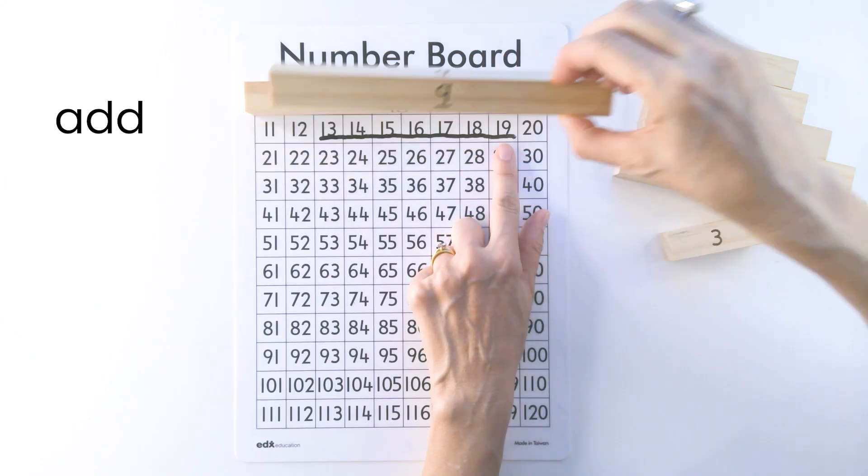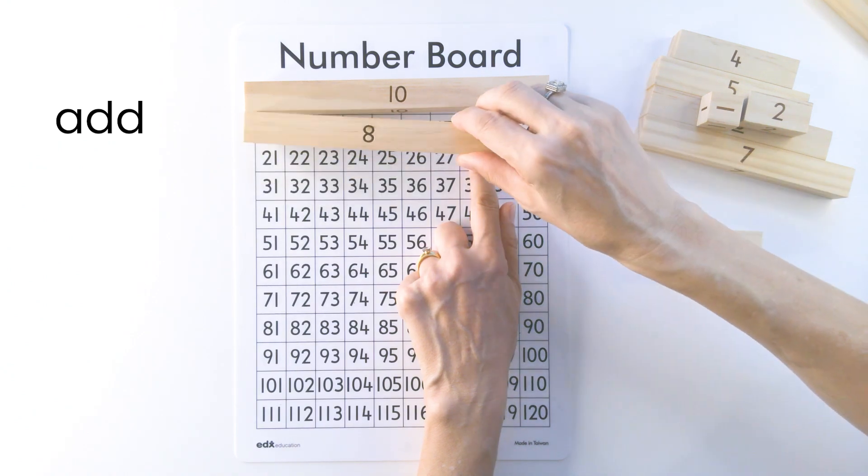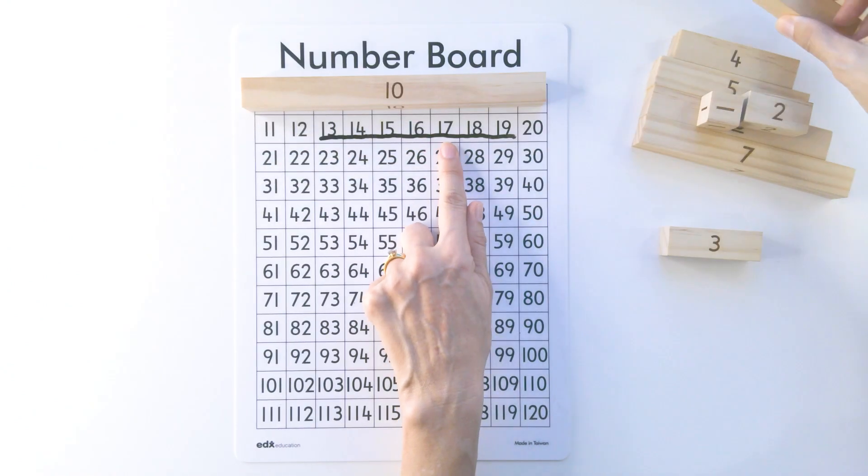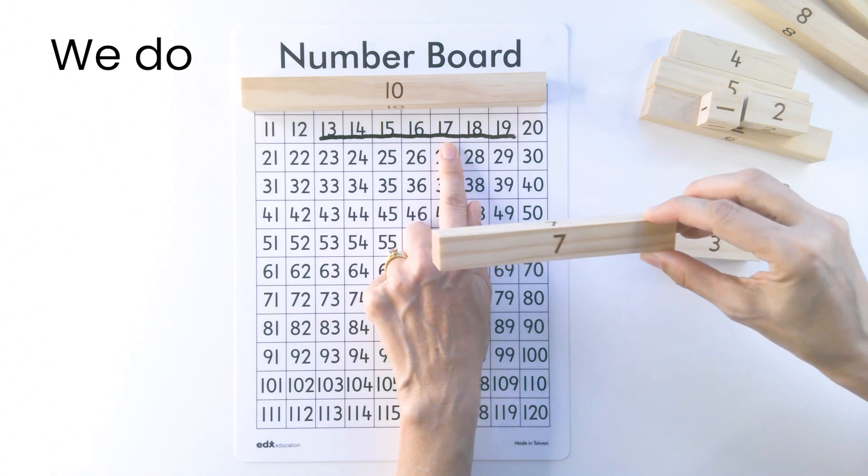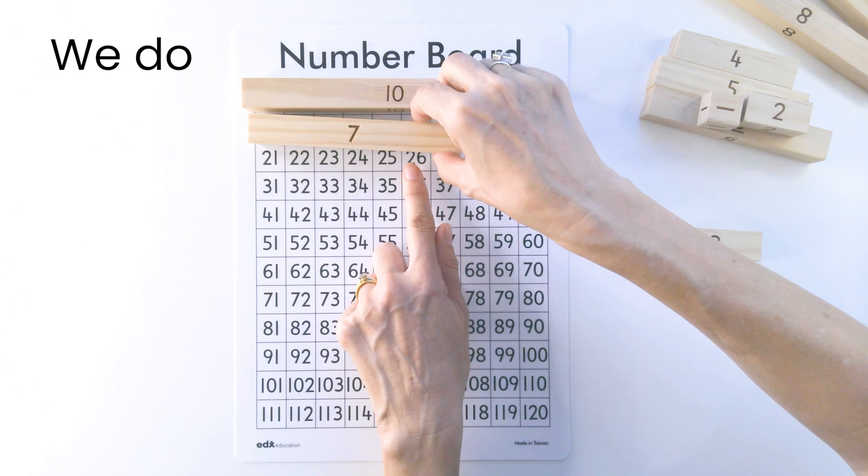The next one, 18 means 8 add 10. 17 means, can you say it with me, 7 add 10. Good.